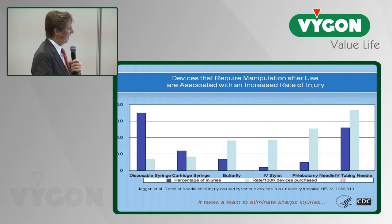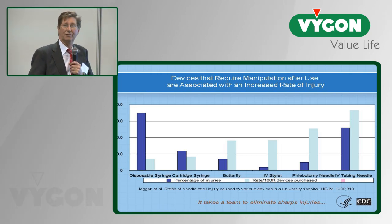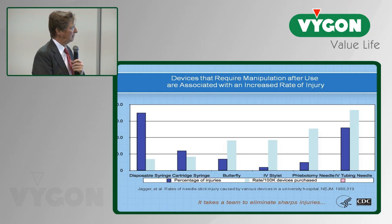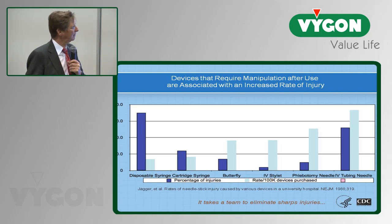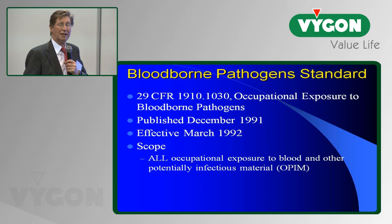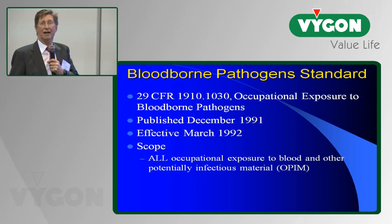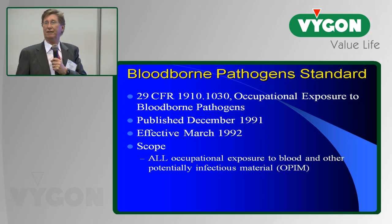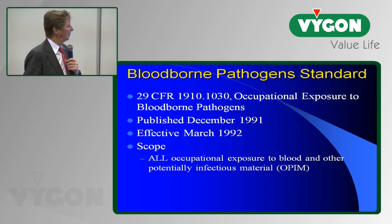If we look at the causes of these needle stick injuries, IV tubing needles was one of the most common causes. This led to the passage in the early 90s of the blood-borne pathogen standard by the Occupational Safety and Health Administration.